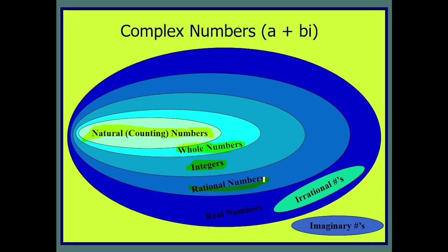Jo numbers jo p over q ki shakal meh likhay jah sakte woh rational hain, aur jo nahi likhay jah sakte woh irrational hain. In dono ka union jo hai woh real numbers kehlate hain. Jo real numbers ke ilawah hain, those are known as complex or imaginary numbers of the form a plus bi.